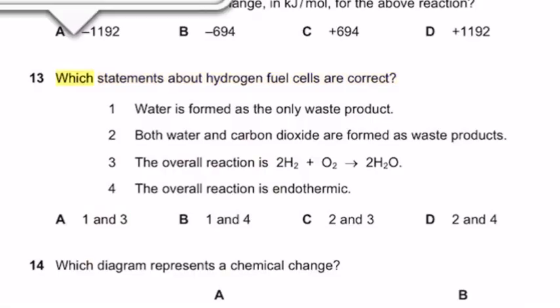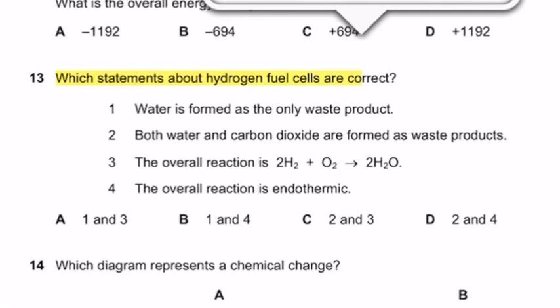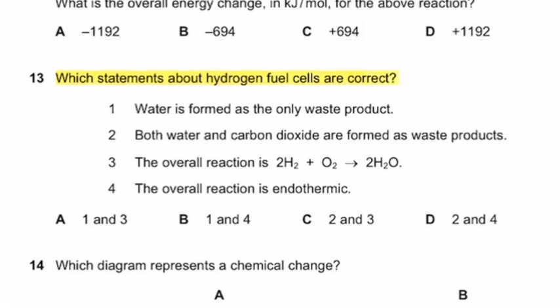Question 13: Which statements about hydrogen fuel cells are correct? Option number 1: Water is formed as the only waste product. Option 2: Both water and carbon dioxide are formed as waste products. Option 3: The overall reaction is 2H2 plus O2 make 2H2O. Fourth option is wrong because there is no carbon dioxide. Third option is also correct because the overall reaction is 2H2 plus O2 make 2H2O. Fourth option, the overall reaction is endothermic.